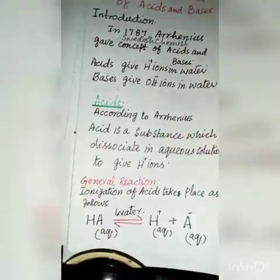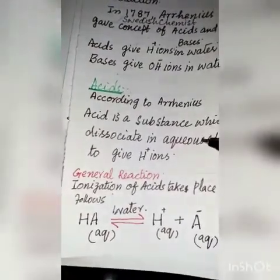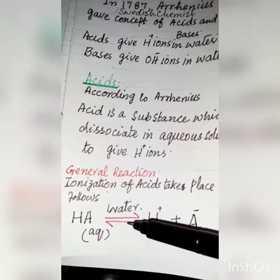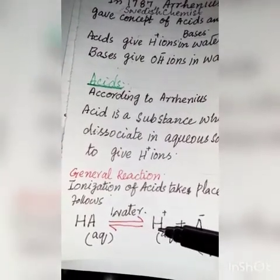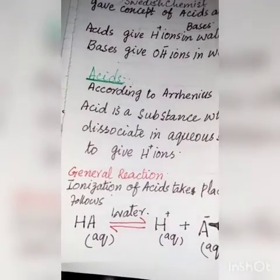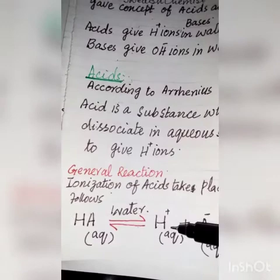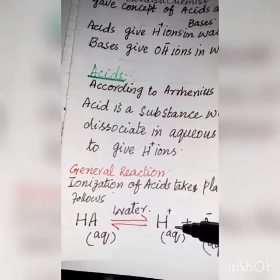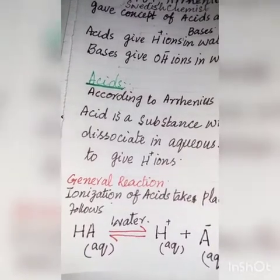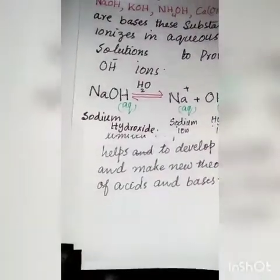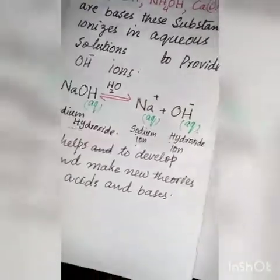Now we are taking another example which is given in our textbook, explaining the general reaction. Here we have a symbolic acid HA. When we dissolve this acid into water, H+ ions and A- ions are separated from each other. HA on dissolution in water gives freely moving protons, which is the property of an acid according to Arrhenius.